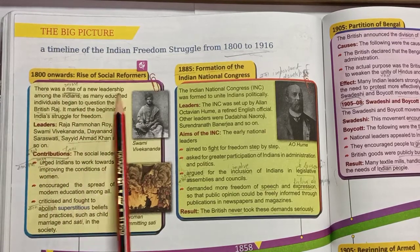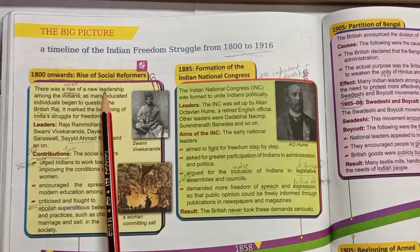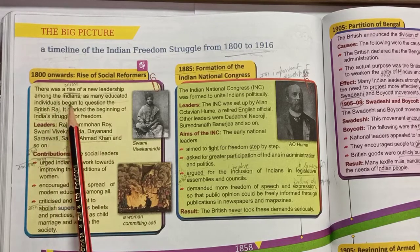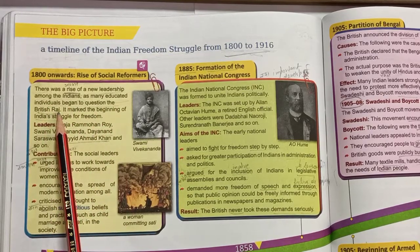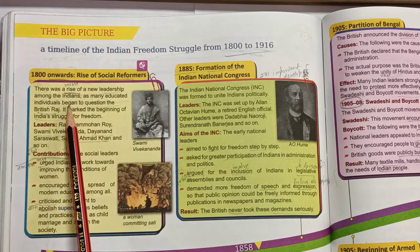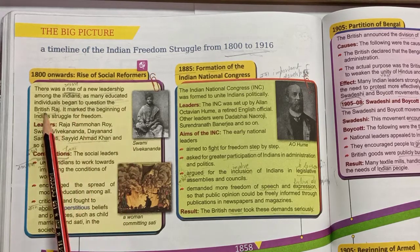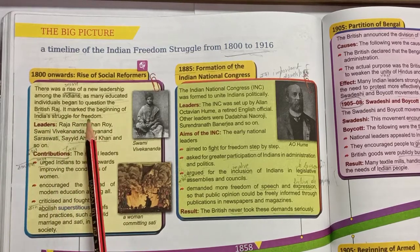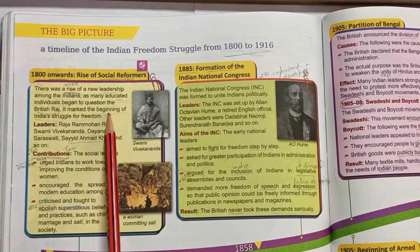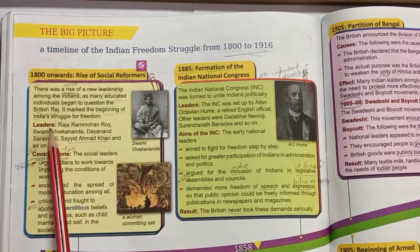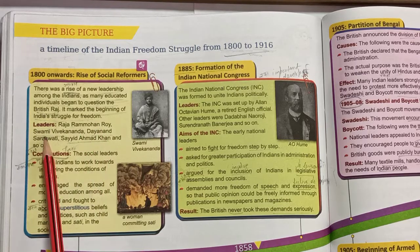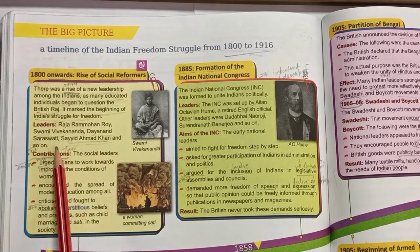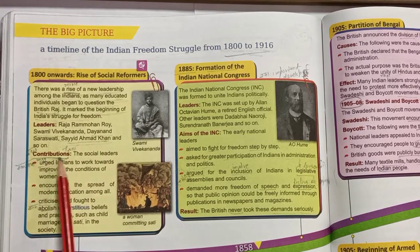Around 1800, as many educated individuals began to question the British Raj, it marked the beginning of the Indian struggle for freedom. Who were the leaders? Raja Ram Mohan Roy, Swami Vivekananda, Dayananda Saraswati, Sayyad Ahmed Khan, and so on. There were a lot of leaders who participated and made their contributions.